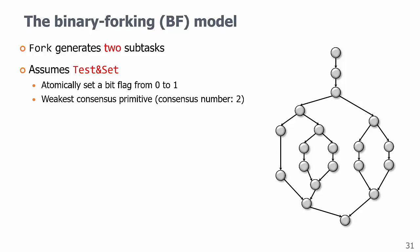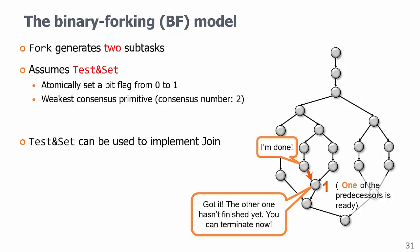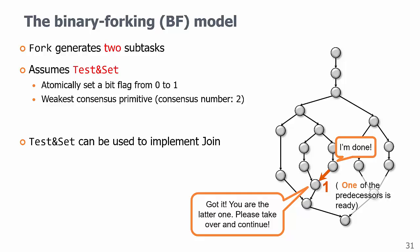For a join node, we can initialize the flag to be 0, then the first subtask finishes will try to test and set and succeed, and the second one comes, fails the test and set, knows the other task has finished, and continues the computation after the join. We no longer need join, so this model is the binary forking model.